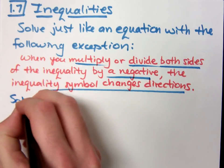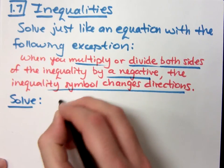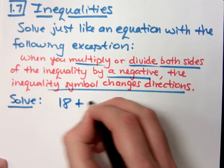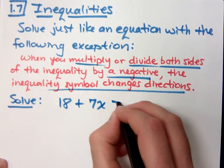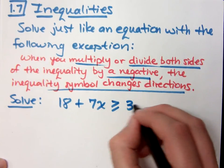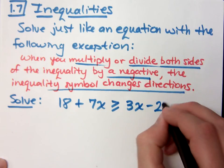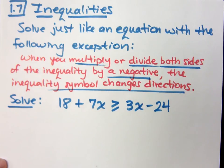So let's take this guy right here. If I ask you to solve 18 plus 7x is greater than or equal to 3x minus 24, this is a nice linear equation. We're going to work on getting all the variables to one side and constants on the other.